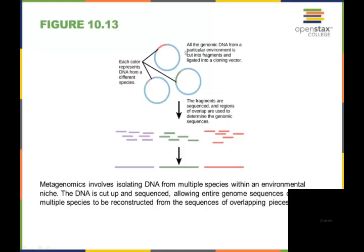All the genomic DNA from a particular environment is going to be cut into fragments and ligated into a cloning vector. These fragments are sequenced, and the regions of overlap are used to determine the genomic sequences.